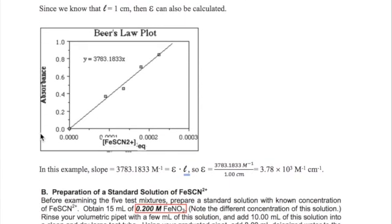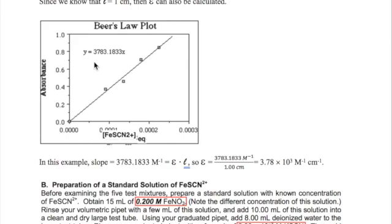So in the plot we have on the screen, slope is equal to 3783.1833 per molar, which is equal to epsilon times L. Plugging in one centimeter for L, we can solve for epsilon being equal to 3.78 times 10 to the third per molar per centimeter. So to summarize,